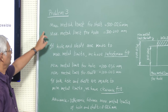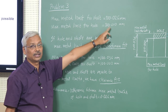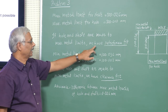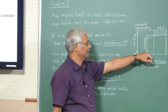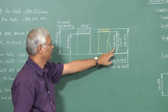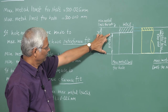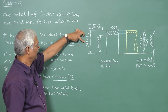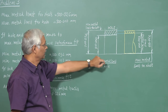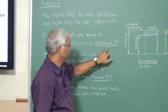The given conditions: maximum metal limit for shaft is 100.026mm, maximum metal limit for hole is 100mm. The tolerance zone for the shaft ranges from 100.003mm to 100.026mm, and for the hole from 100mm to 100.036mm. If both hole and shaft are made to maximum metal limits, we will have an interference fit, since the shaft (100.026mm) will be greater than the hole (100mm).